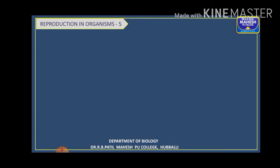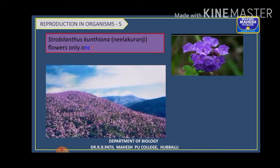Based upon this, we can classify plants into different types. Another example is Strobilanthus kunthiana, commonly called neelakurangi — remember this, it is asked in NEET exams. This plant flowers only once in 12 years. Remember this.